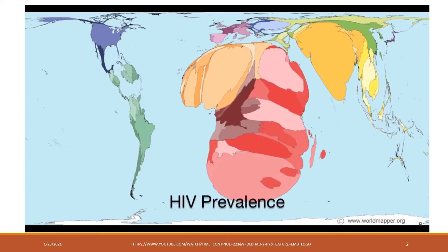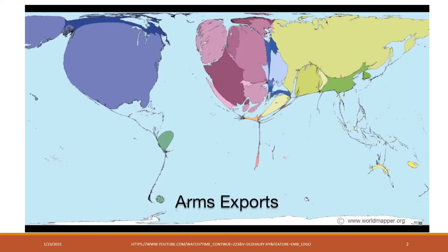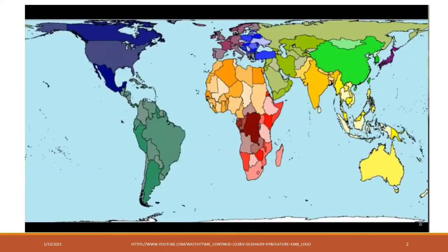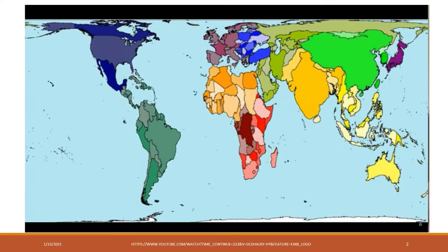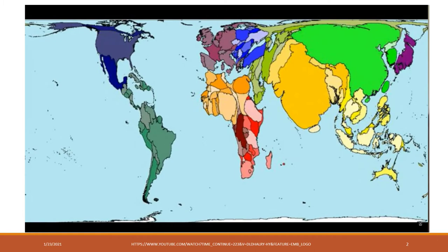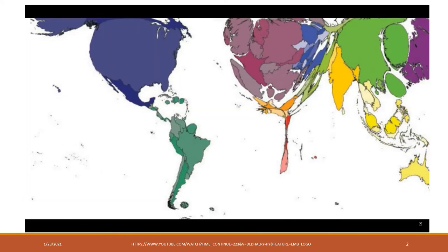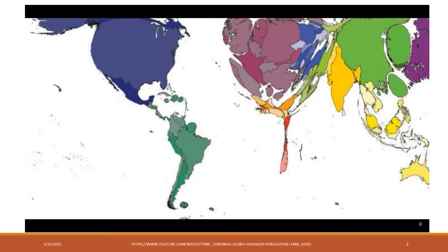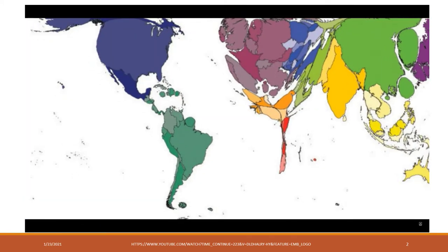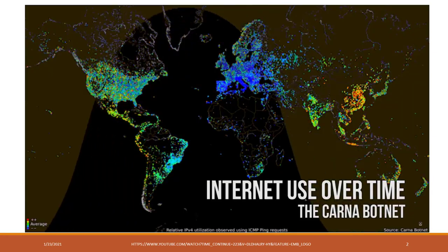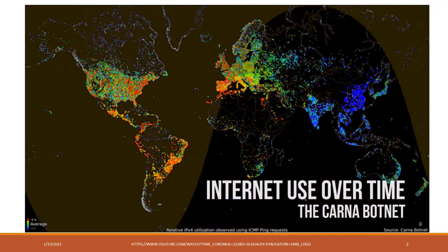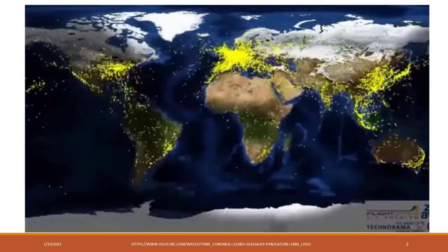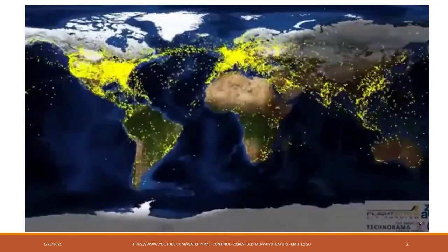World Mapper is an amazing website and software tool that distorts the world based on data. Is the amount of land a country has the most important thing about that country? Of course not. The world morphs from a map showing the amount of land each country has to the amount of people each country has. A World Mapper map shows the number of internet users swelling from 2000 to 2007. These moving maps that stretch into the dimension of time are some of my favorites — one showing internet usage over a 24-hour period, another showing global flights over a 24-hour period.